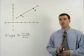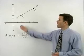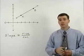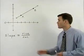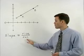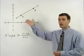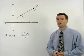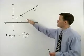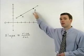In algebra, we use the word slope to describe how steep a line is, and slope can be found using the ratio rise over run between any two points that are on that line. So for the line you see here, let's use the points A and B to find its slope.